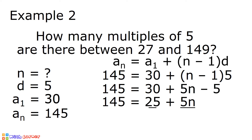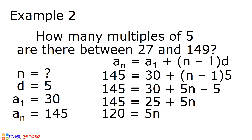To isolate 5n, we have to add negative 25 to both sides of the equation. 145 plus negative 25 is equal to 120. 25 plus negative 25 is 0, plus 5n is equal to 5n. And we have 120 is equal to 5n. Divide both sides by 5. 120 divided by 5 is equal to 24. 5n divided by 5 is equal to n. Therefore, there are 24 multiples of 5 between 27 and 149.